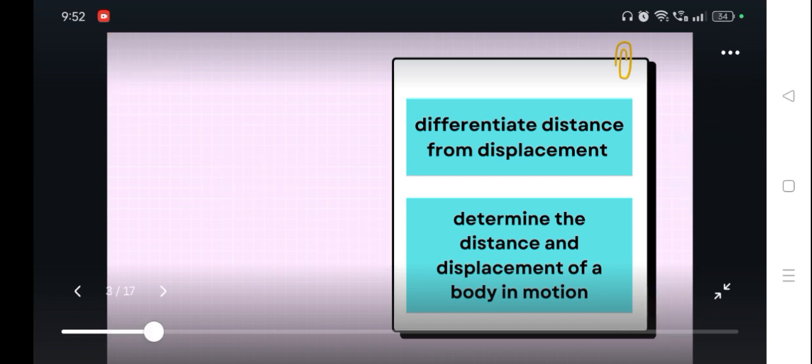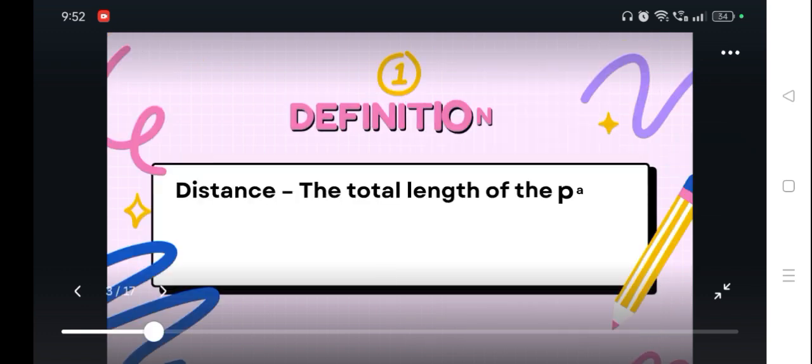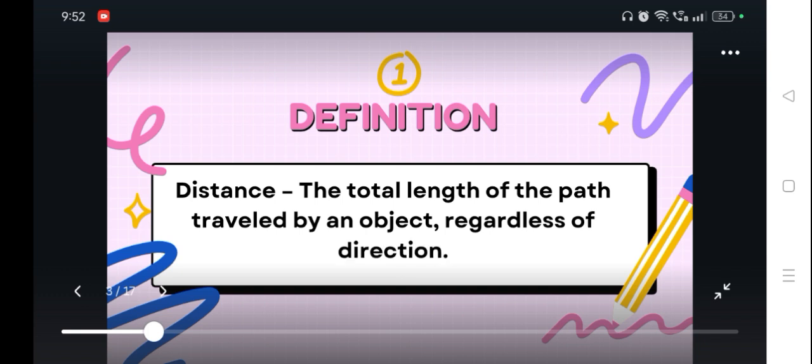We will begin by defining what is distance. The total length of path traveled by an object or covered by an object regardless of direction is called distance.